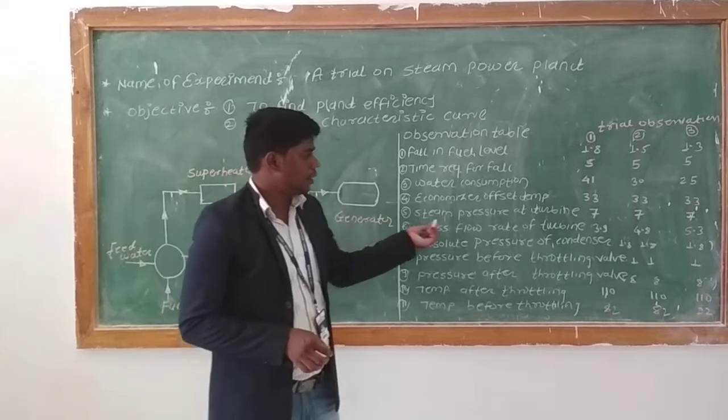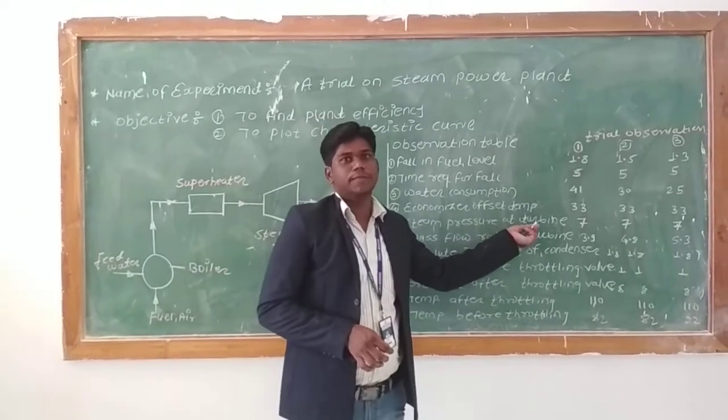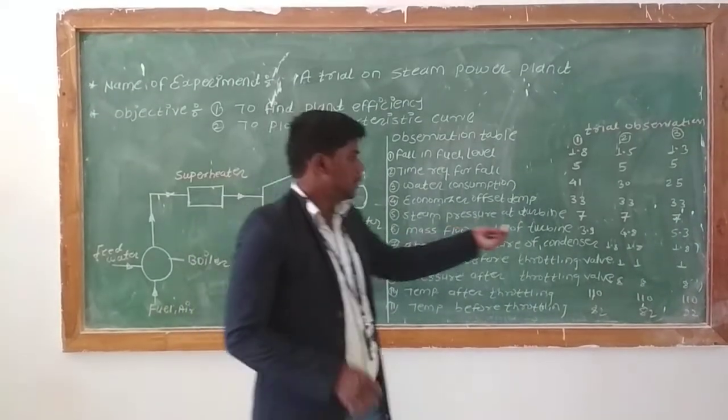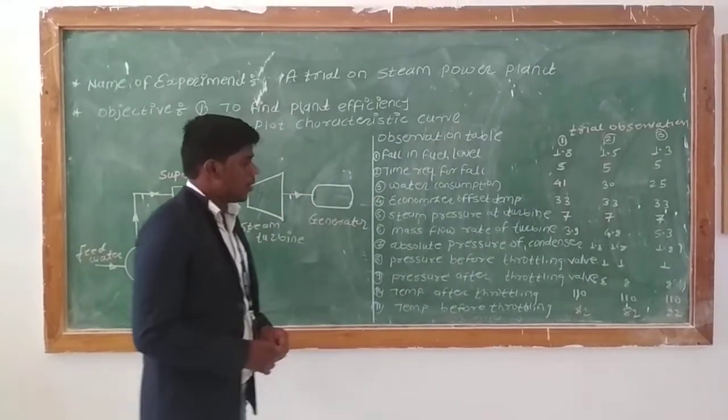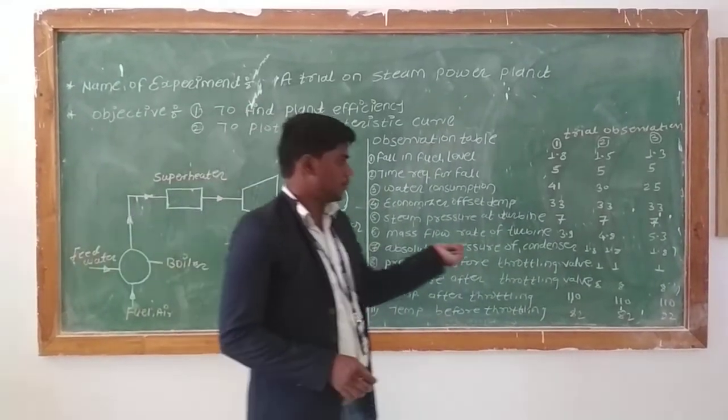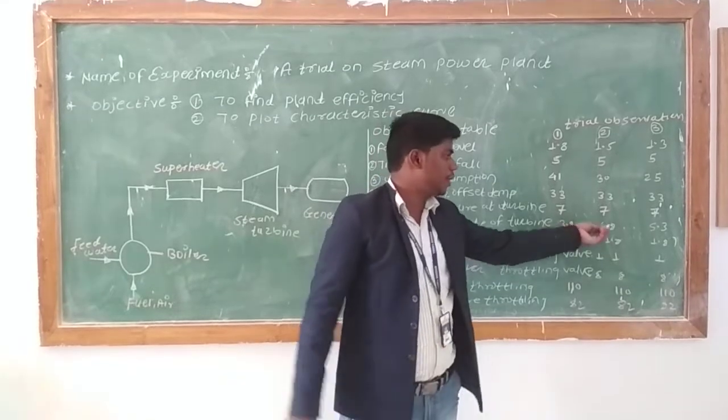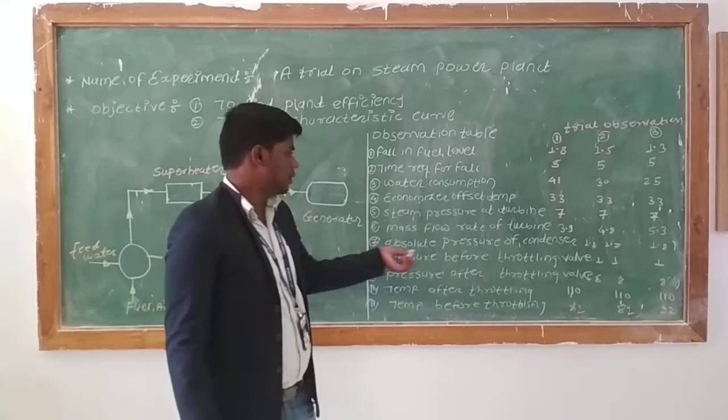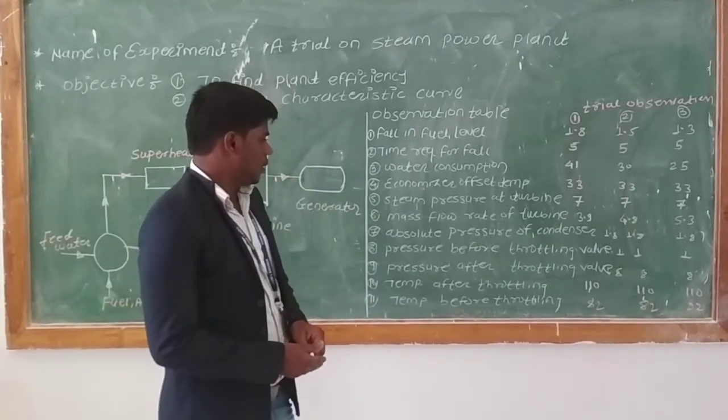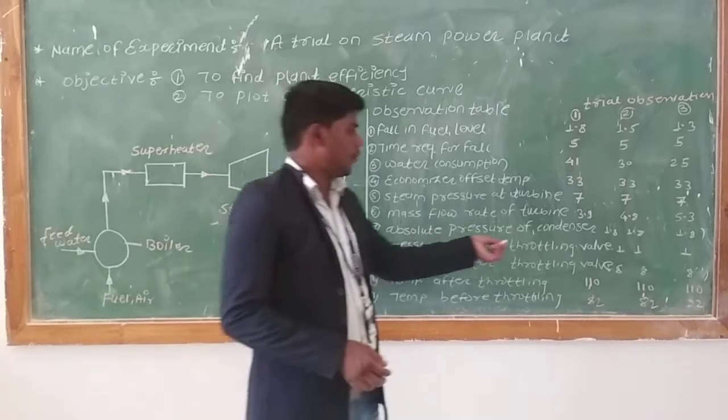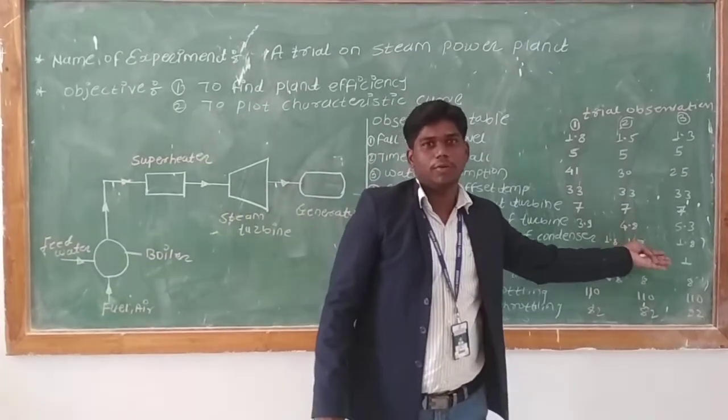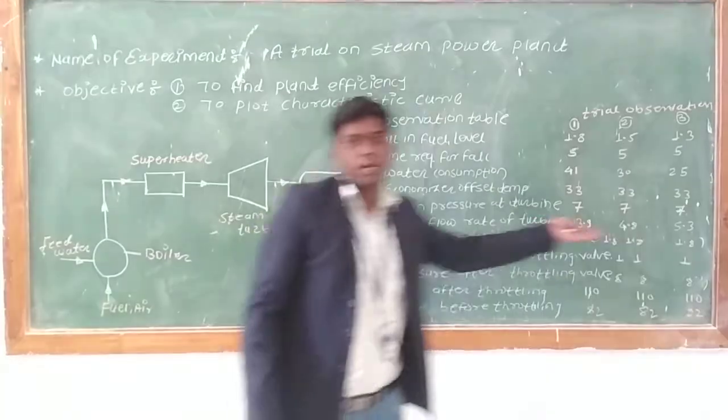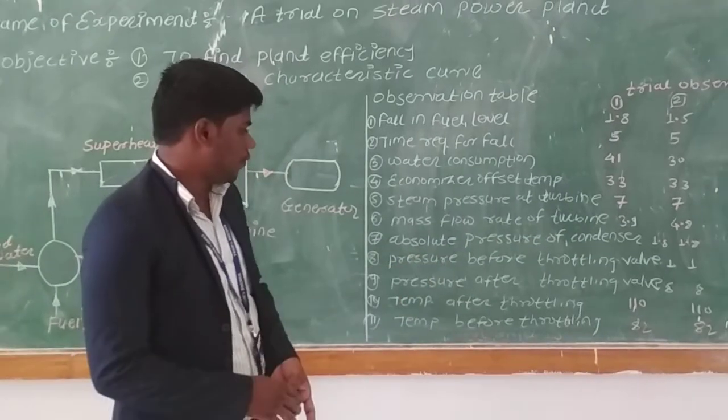Steam pressure at the turbine is 7 bar, 7 bar, and 8 bar. Mass current of turbine is 3.5, 4.8, and 5.3. Then absolute pressure of condenser: 1.8, 1.8, and 1.8 bar.